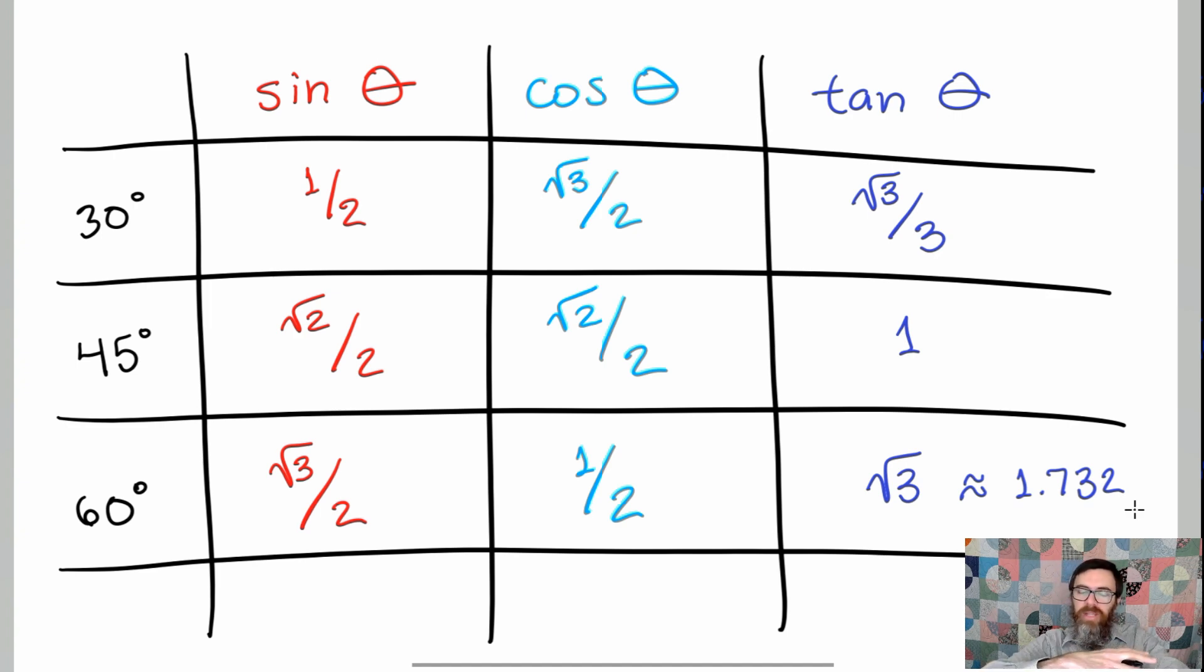However, as the angle gets bigger, cosine, which is related to your x, gets smaller and smaller. So, the information that we have here in this chart is going to be crucial for everything else that we do in this course. A lot of things for us to memorize, and there are going to be some neat little mnemonics that we see along the way to help us figure out what we're supposed to do.